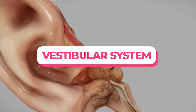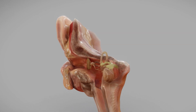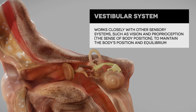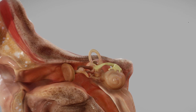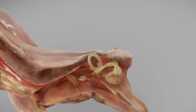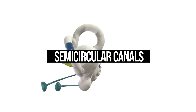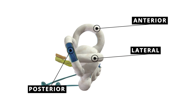The vestibular system is a complex sensory system crucial for normal movement and balance. Located in the inner ear, it works closely with other sensory systems, such as vision and proprioception, to maintain the body's position and equilibrium. There are three semicircular canals — anterior, posterior, and lateral — in each ear, oriented at roughly right angles to each other.